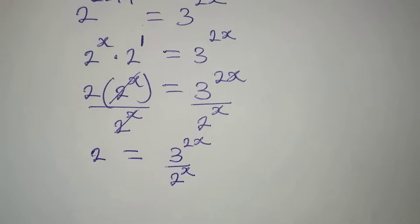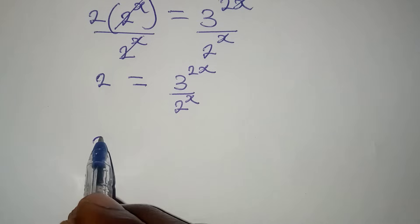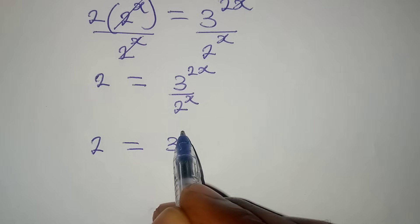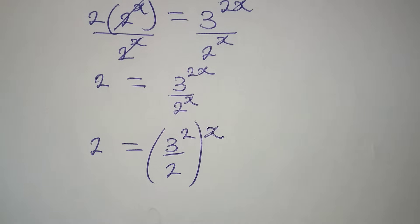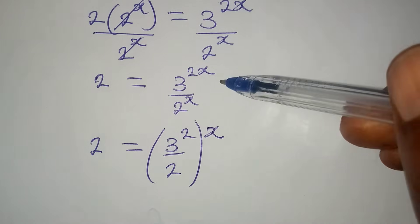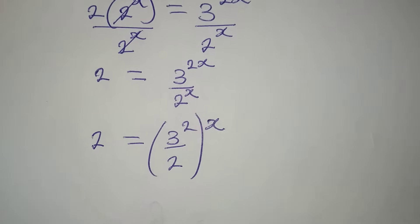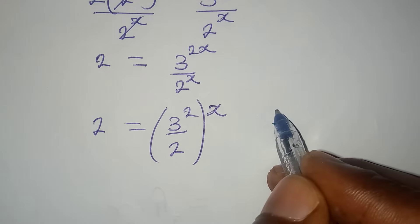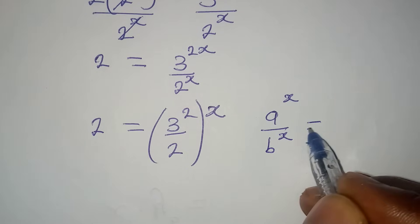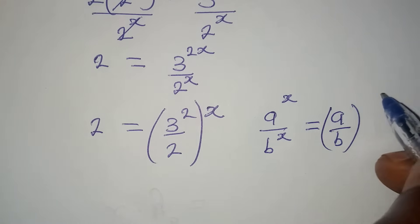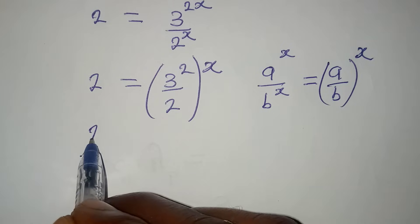This is the same thing as 2 equals 3 squared over 2, everything to the power of x — because we have power x for the 2 and power x for the numerator. We combine them using the rule: a to the power of x over b to the power of x equals a over b, all raised to the power of x.